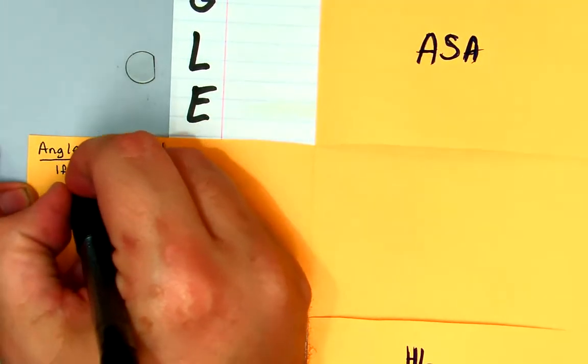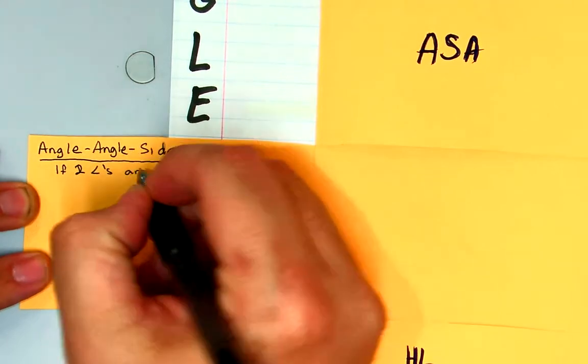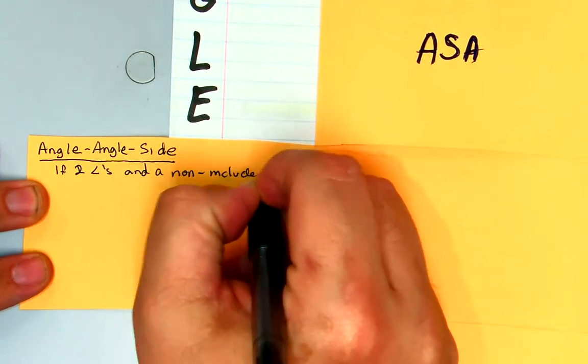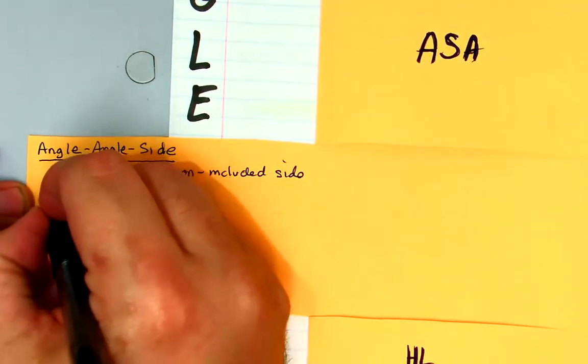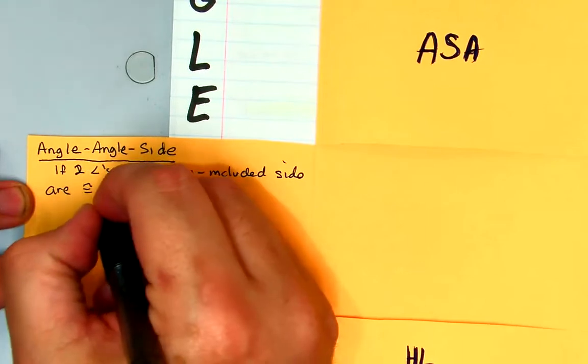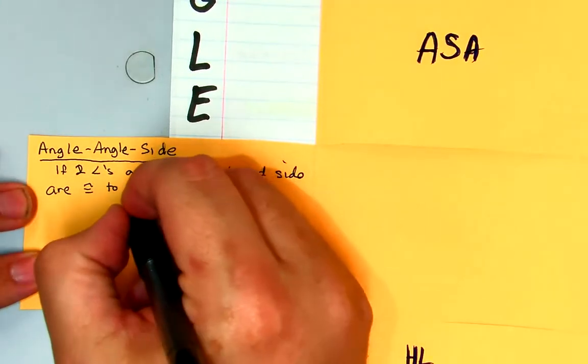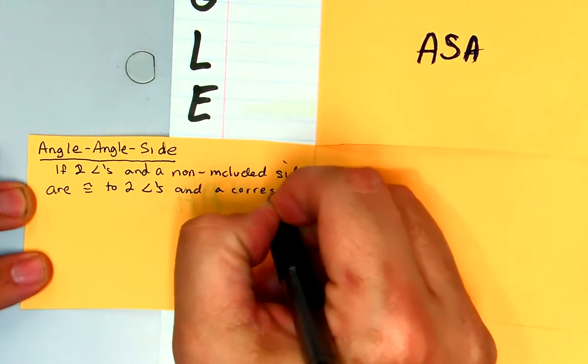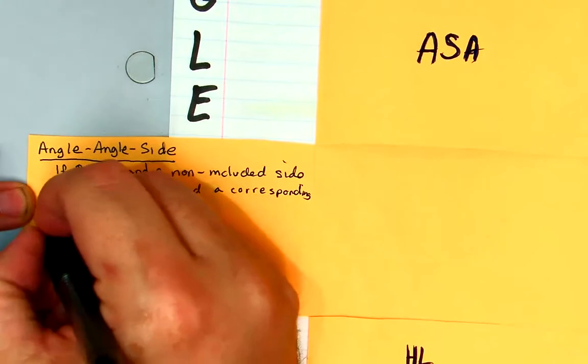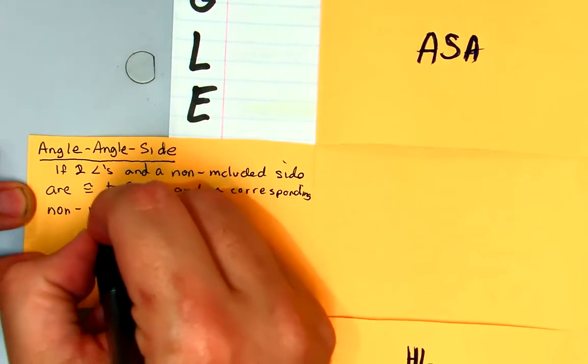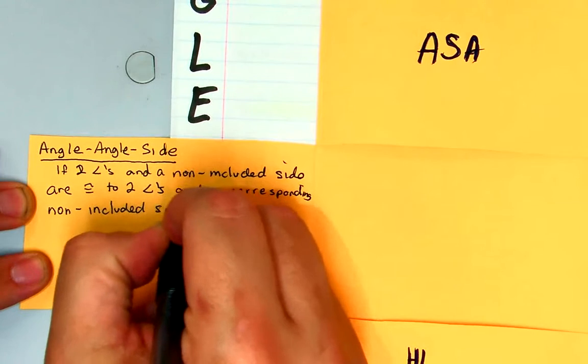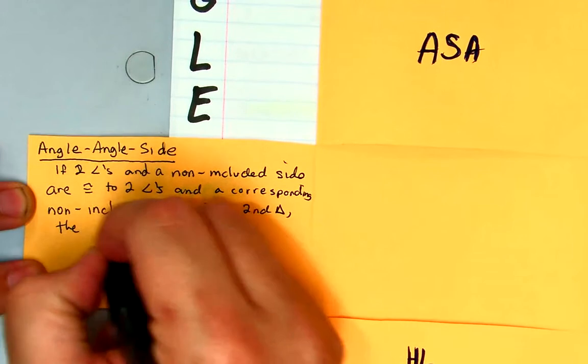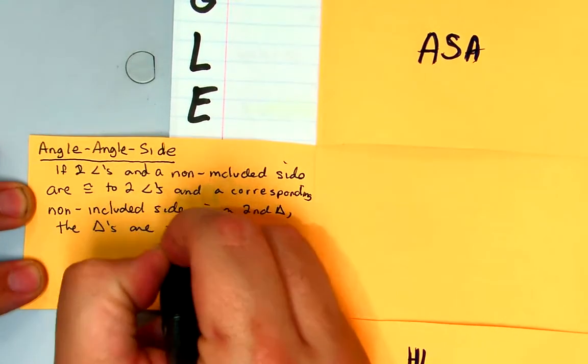If two angles and a non-included side are congruent to two angles and a corresponding non-included side in a second triangle, the triangles are congruent.